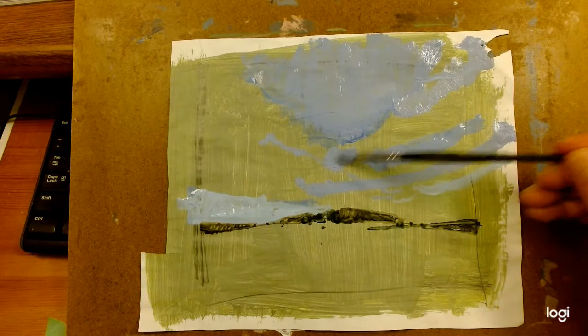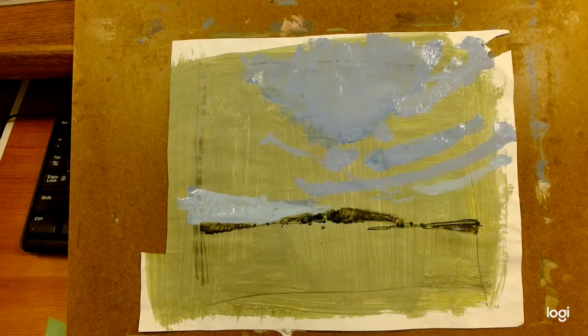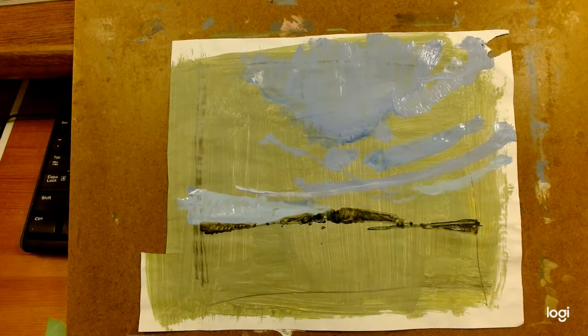So lines and shapes, and all of this forms into a composition. And there is paint surface. What does the surface of the actual paint look like?